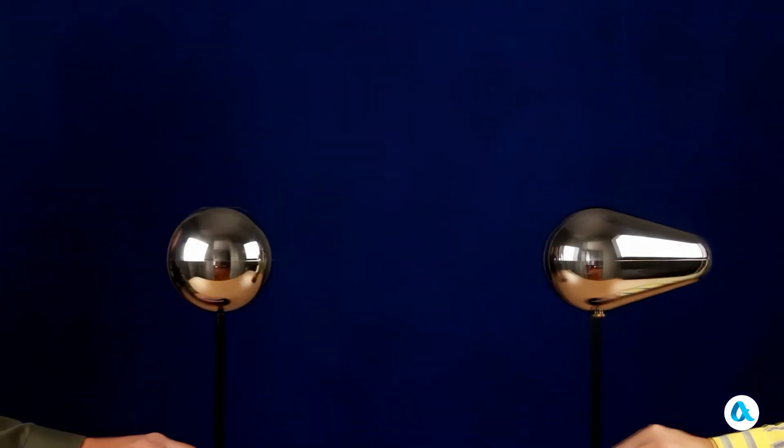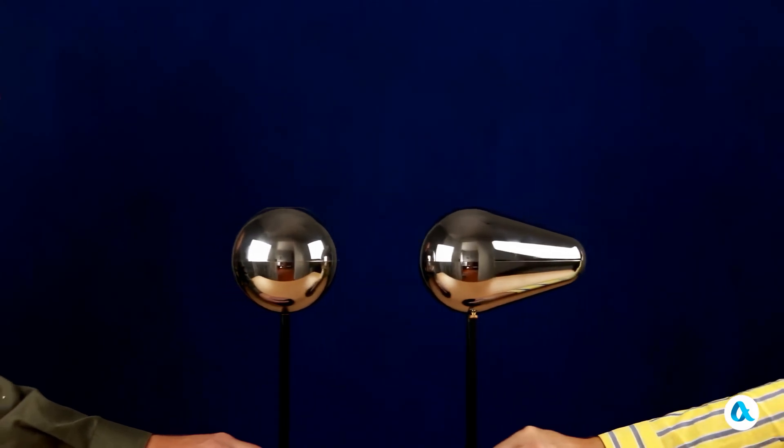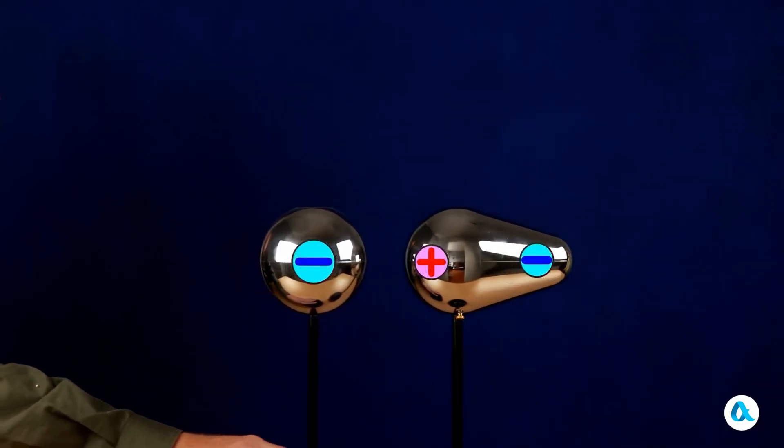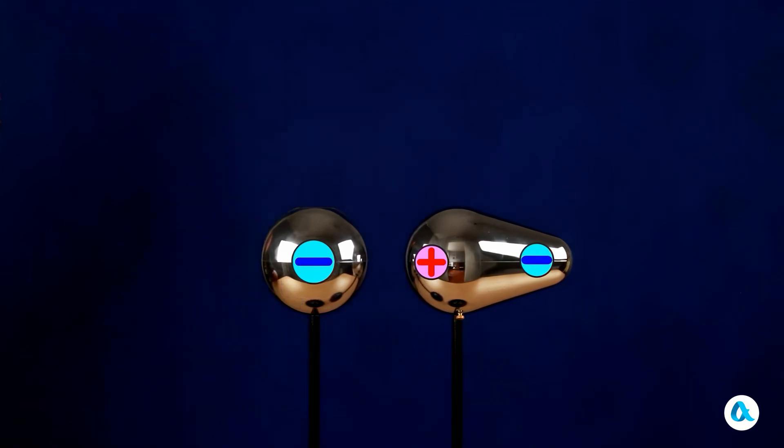Let's move the balls towards the elongated object without letting them touch. And now the charges on the elongated object should redistribute so that the negatively charged electrons move further away from the ball.